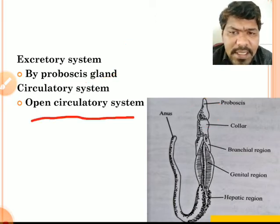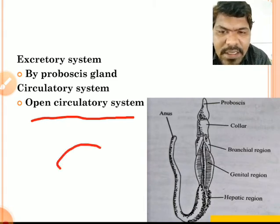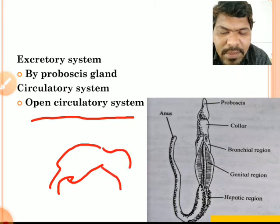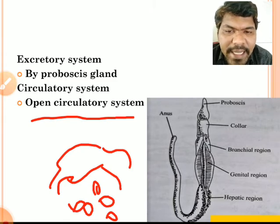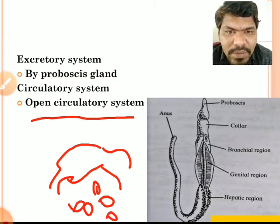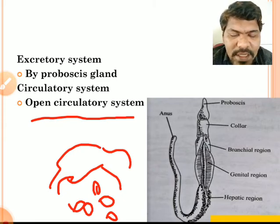Circulatory system: an open circulatory system is present in hemichordates. In an open circulatory system, blood is pumped by the heart and enters into the haemocoel, where there is direct contact between the blood and the tissues.